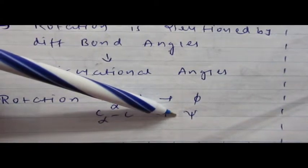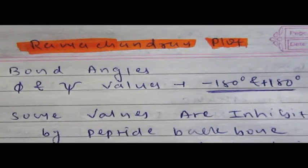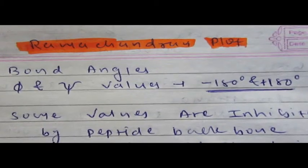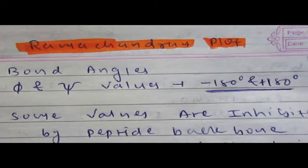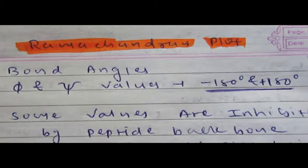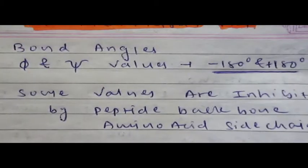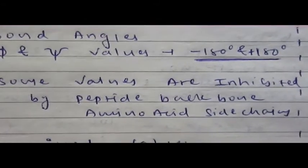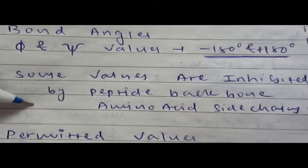Another important note is on Ramachandran plot. These different bond angles—phi or psi angles—have values that lie between minus 180 to plus 180 degrees. Among them, some values of these torsion angles are inhibited by peptide backbone and some values are allowed.